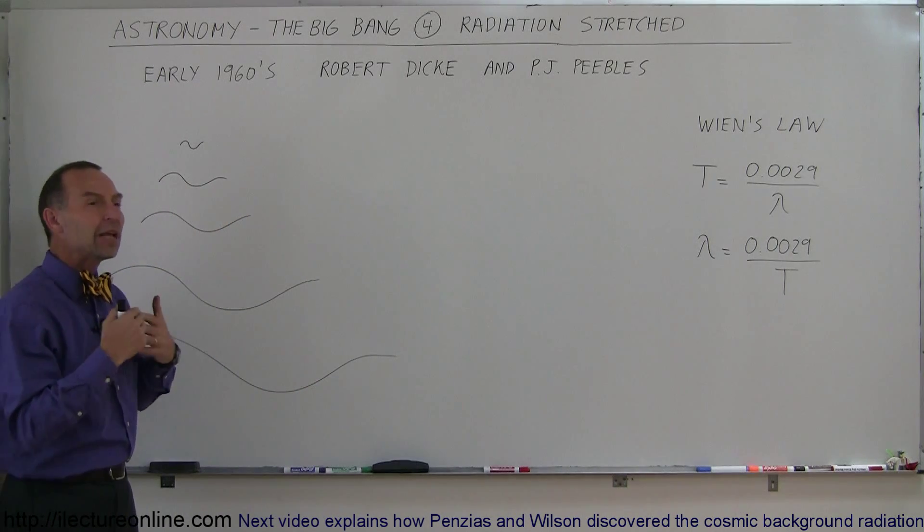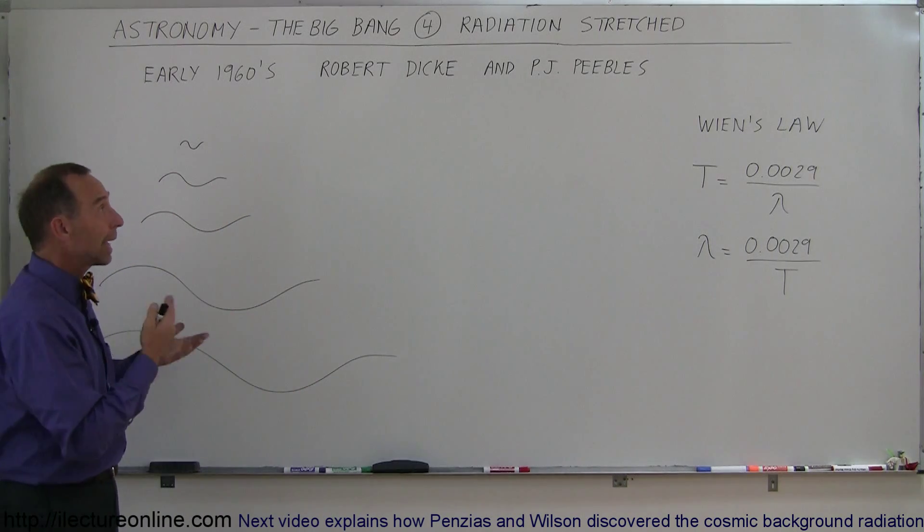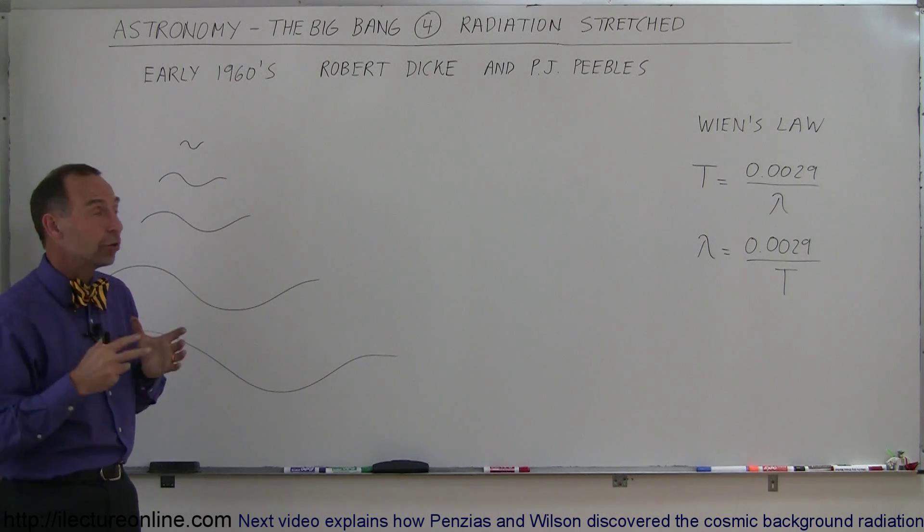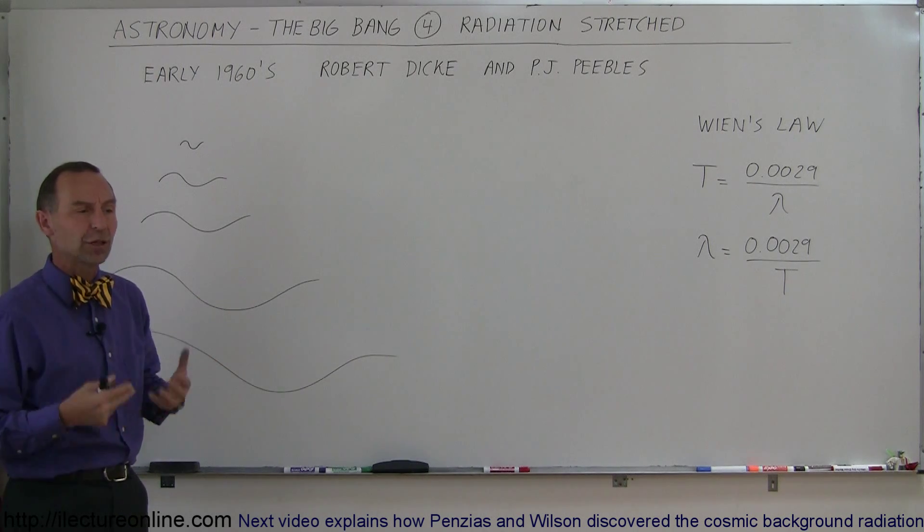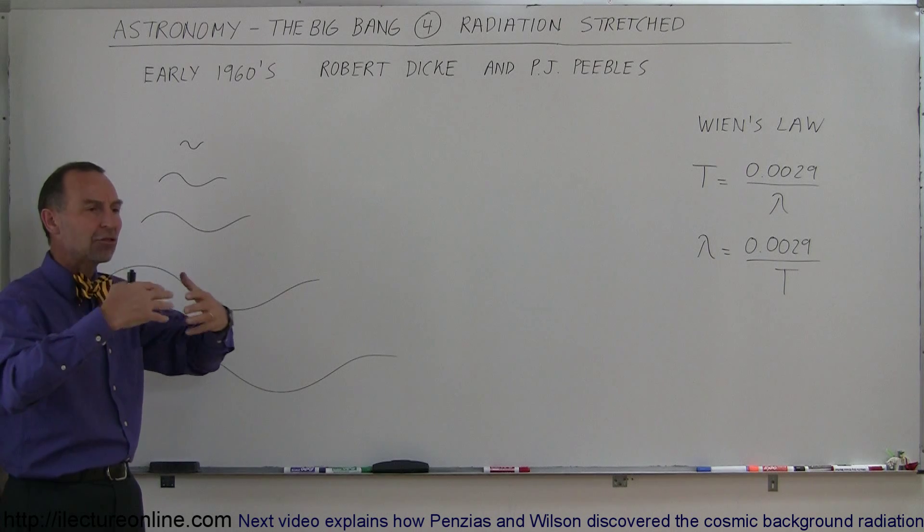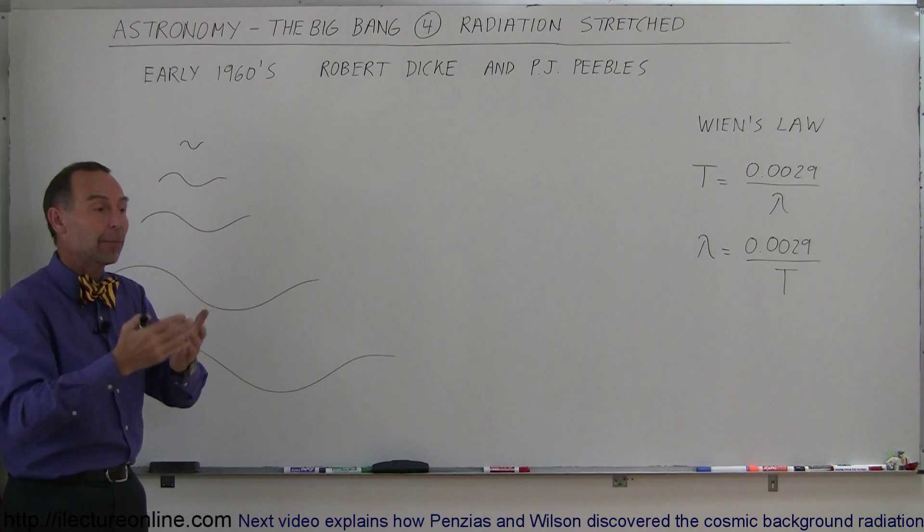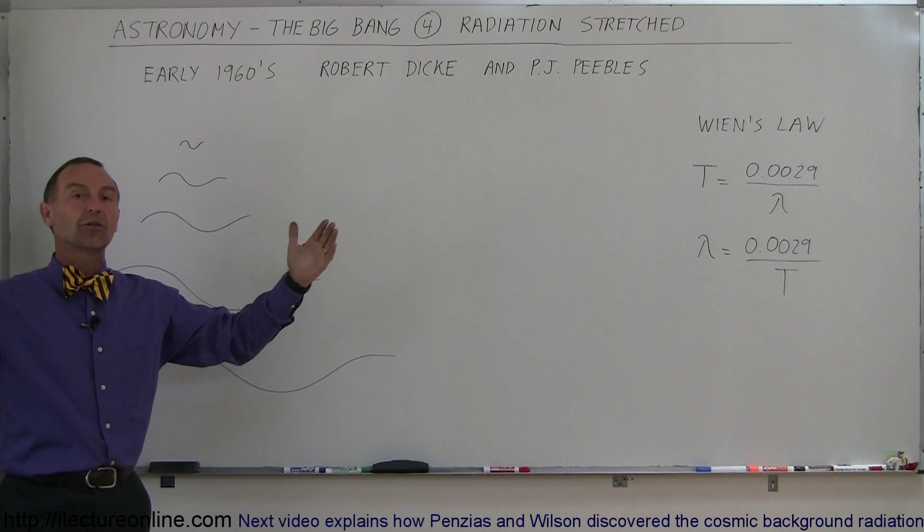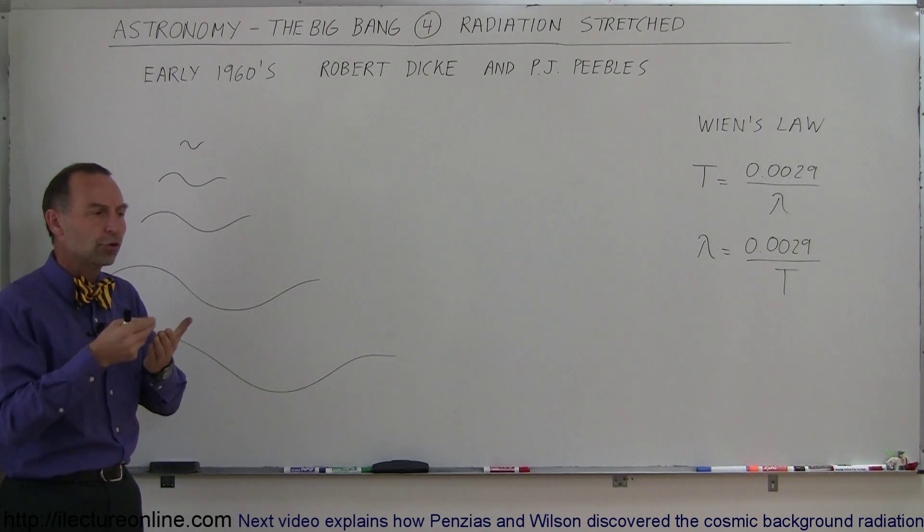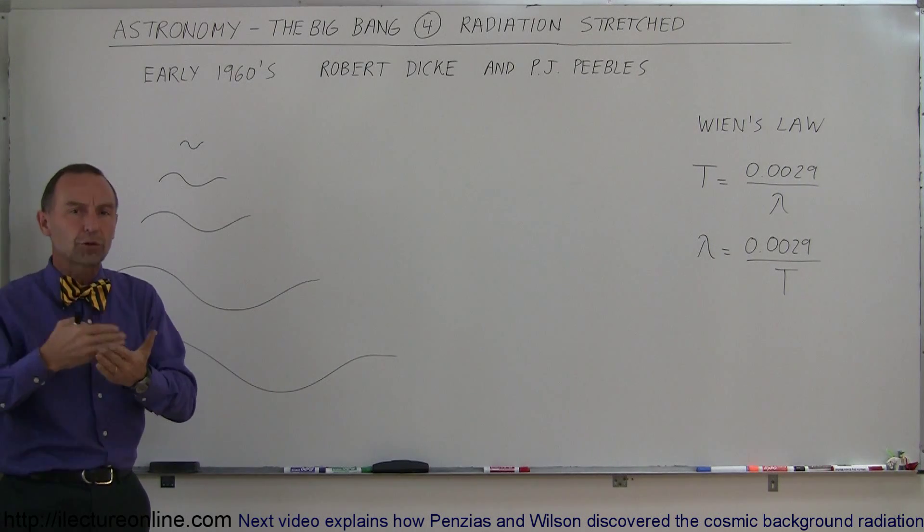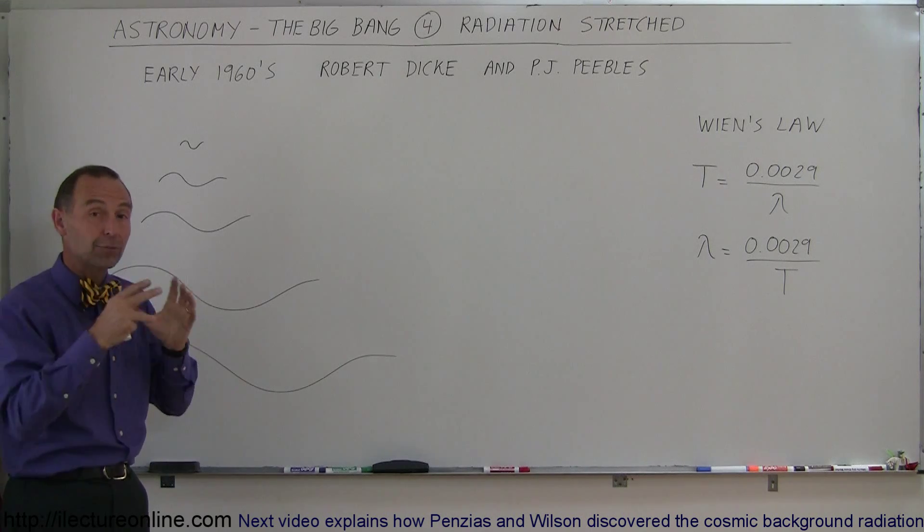So they wanted to figure out if that radiation is still out there, and so they began to make plans for building a telescope to try and detect that radiation. They wanted to find out if there was radiation left in the universe that was there at the very beginning, but that must have since been expanded to something very large today. In other words, the universe would have cooled down to a much cooler temperature compared to what the temperature was billions and billions of years ago.